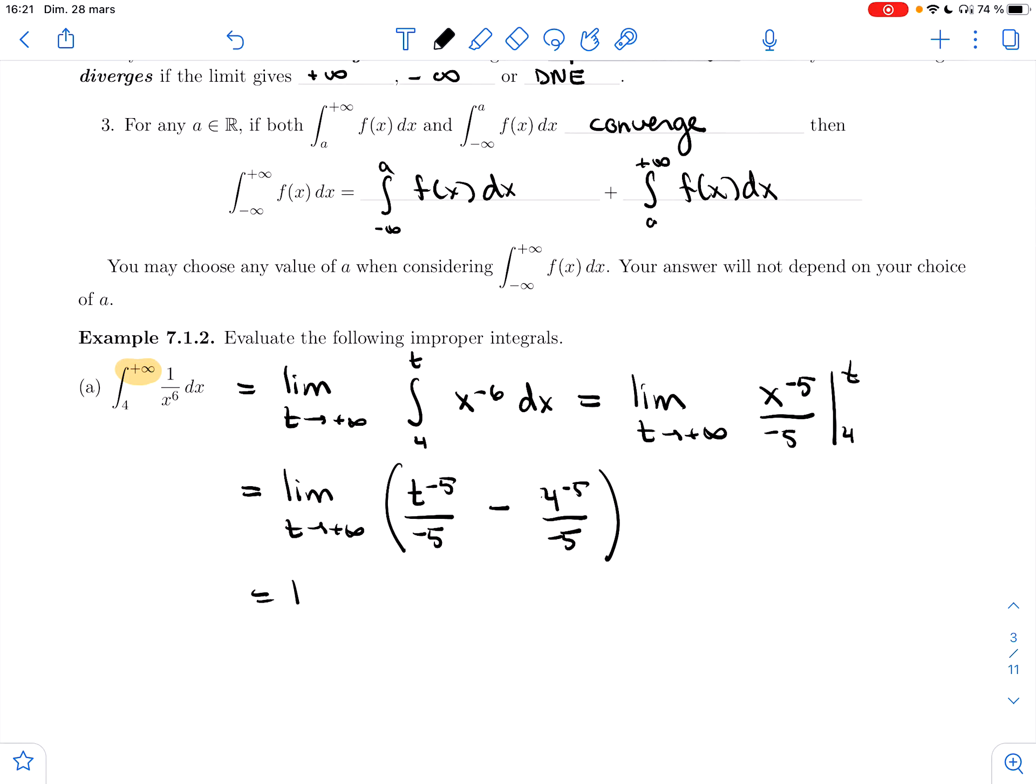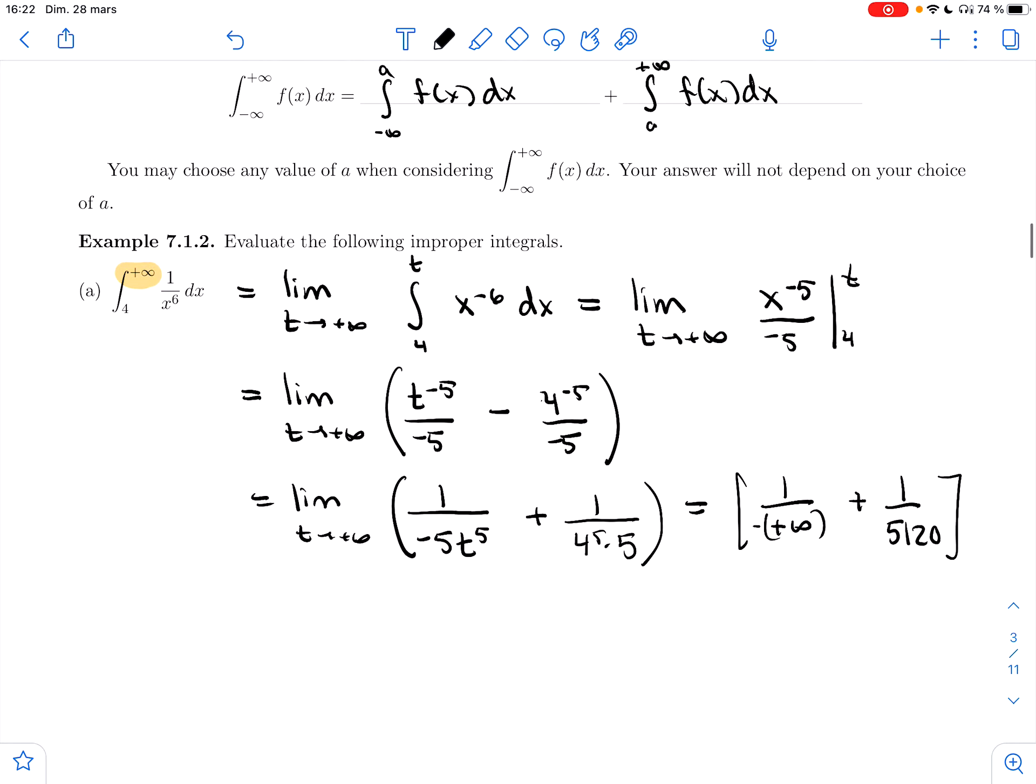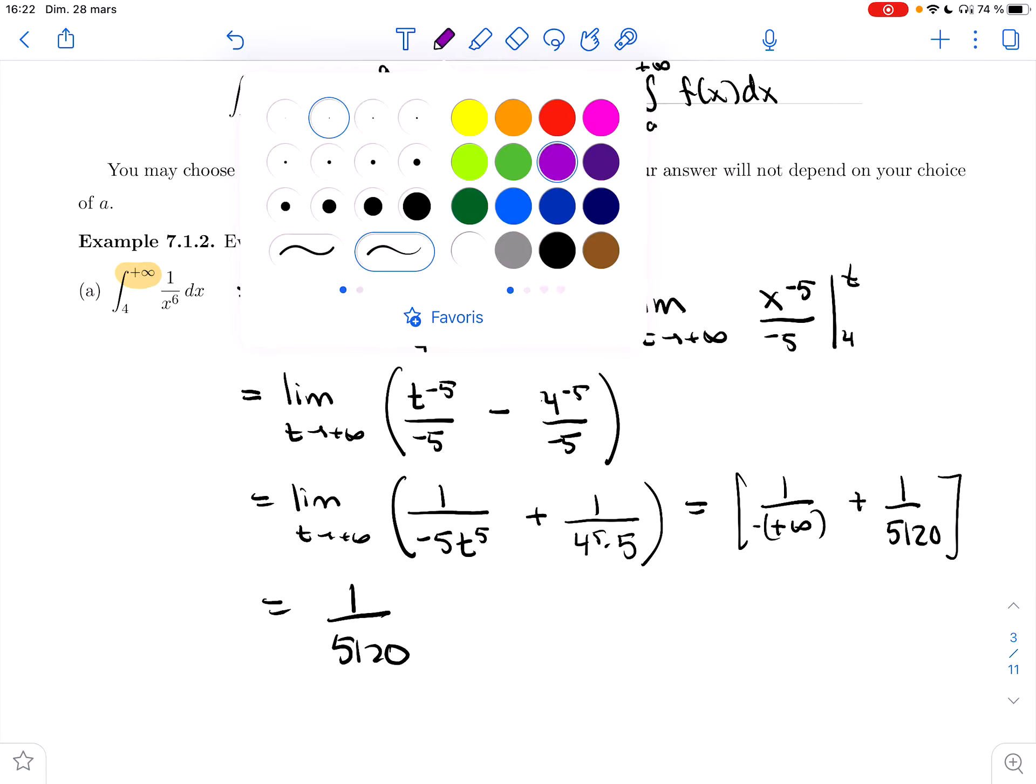Let me rewrite it in a way that will make the limit easier to evaluate. So -1/(5t^5) + 1/(4^5 × 5). The first term gives you 1 over 5120, and that's the only term that's left. The other term gives 0.